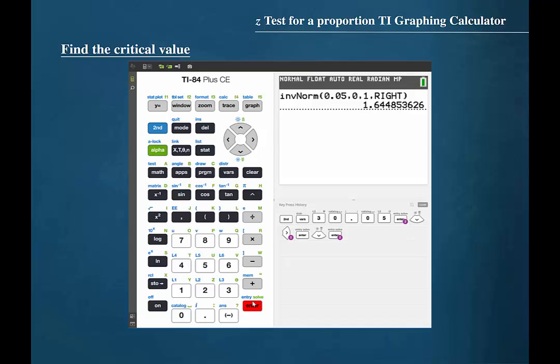The calculator then gives us the critical value 1.645, which the textbook rounds to 1.65. We can also find the test value using the TI graphing calculator.